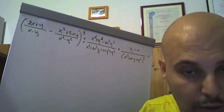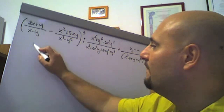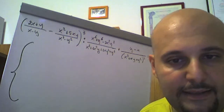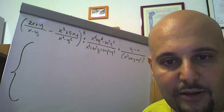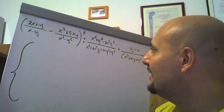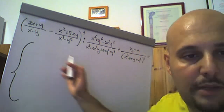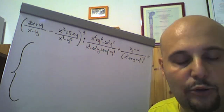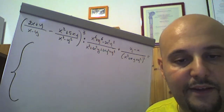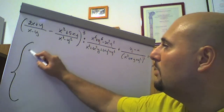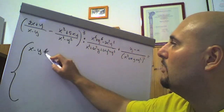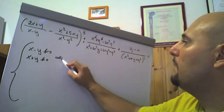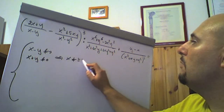Minimi comuni multipli, campi di esistenza. I due denominatori devono essere diversi da 0. Visto che x quadro meno y quadro è una differenza di quadrati, lo possiamo scrivere come (x meno y) per (x più y). Dovrà essere x meno y diverso da 0, e x più y diverso da 0; in pratica diciamo x diverso da più o meno y.